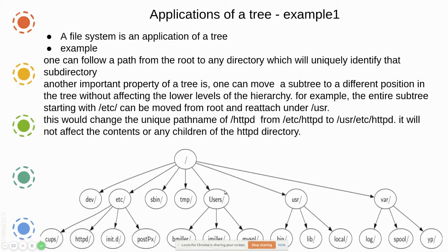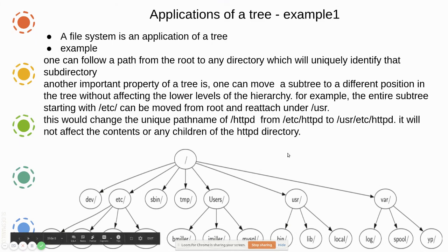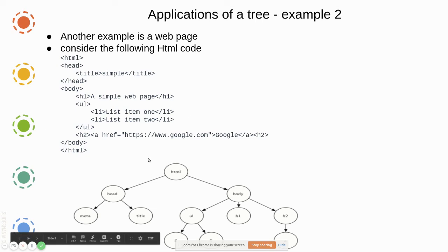Another important property of a tree is that you can move a subtree — for example, the entire subtree starting with etc can be moved from root and reattached under slash usr. This would change the unique path name of httpd from /etc/httpd to /usr/etc/httpd, but it will not affect the content of any children of the httpd directory. In web pages, when you click a link it goes to another link — that itself is a tree structure.